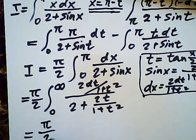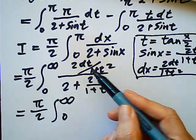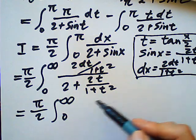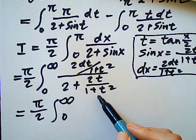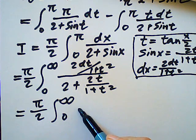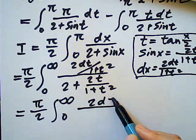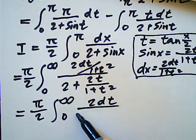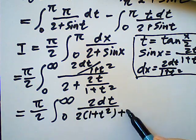Then this is equal to pi over two from zero to infinity. Now, two, two, two cancel out. You might have one over one over one times one plus t square. So that will be two dt, right? And two, one plus t square, plus two t.